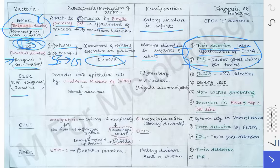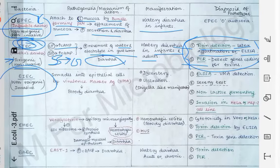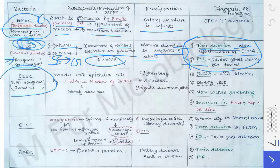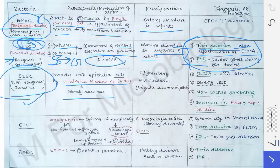Next is enteroinvasive E. coli (EIEC). Write the virulence factors first, then the pathogenesis: EIEC invades epithelial cells using virulence marker antigen (VMA). Due to this invasion, there is bloody diarrhea — the manifestation is dysentery and ulceration in the gut wall. This ulceration causes bleeding, producing a shigella-like manifestation. That is why EIEC is also called shigellosis, because it mimics shigella.